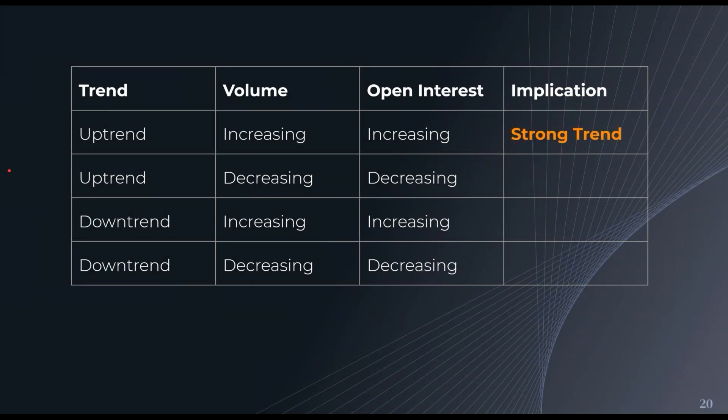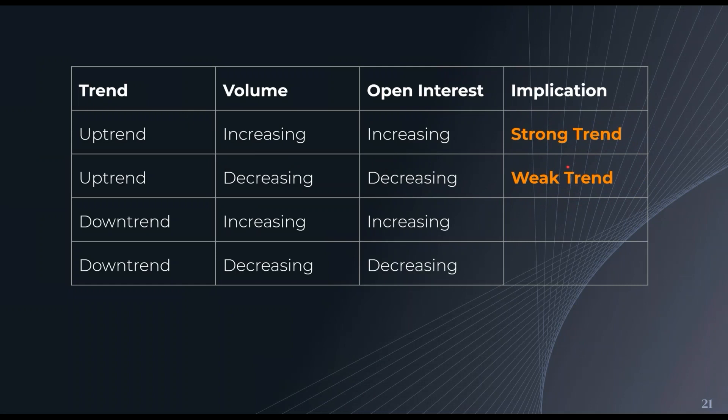In the second case, we are in an uptrend but volume is still decreasing and open interest is also decreasing. Trading activity isn't increasing despite the price increase, and new participants are not entering the market. Open interest disagrees with our uptrend analysis, so the implication is that we have a weak trend — we expect the price to reverse soon or not move very far.